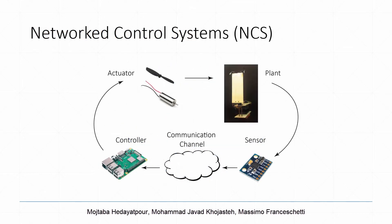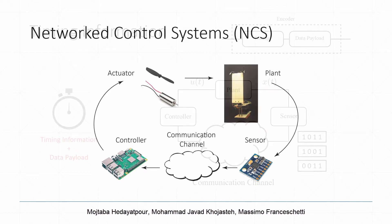A network control system where the feedback loop is closed over a communication channel is a fundamental component of cyber-physical systems. The stabilization of an inverted pendulum, where the sensor measures the angle of the pendulum and transmits it to the controller over a communication channel, is an example of network control systems.